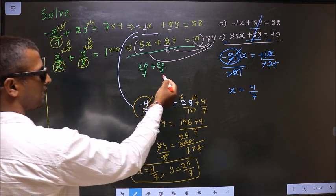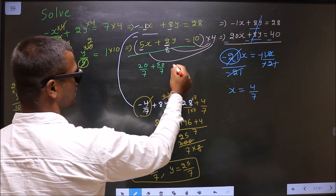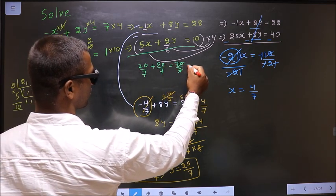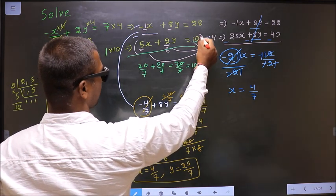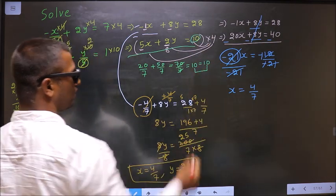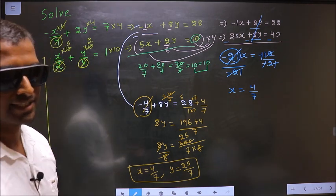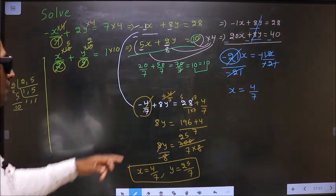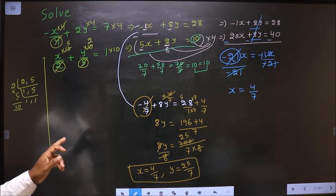So denominators are same, add the numerators. 20 + 50 is 70/7, which is 10. On the other side also, I have 10 present. I got these two numbers same. That confirms the answer is correct. Am I clear? Thank you.